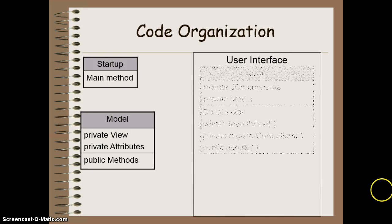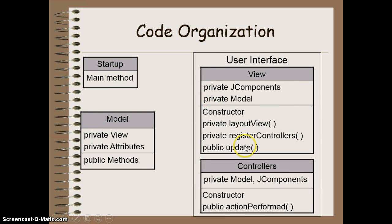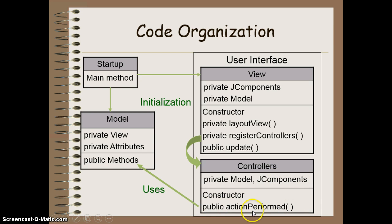So let's go back and see how this modifies our code. We can see here we have our same four sets of classes. The startup method is going to initialize the model and initialize the view. The view itself is going to lay out all of its components and register the controllers, which initializes all of these controller objects. We're then going to wait until some sort of action is performed. When that action is performed it's going to get data from the components and then provide that data to the methods to manipulate the data that's in the model. That method will then end with an update method which says to redraw yourself by using the accessor methods to get access to the data stored in our model's attributes.